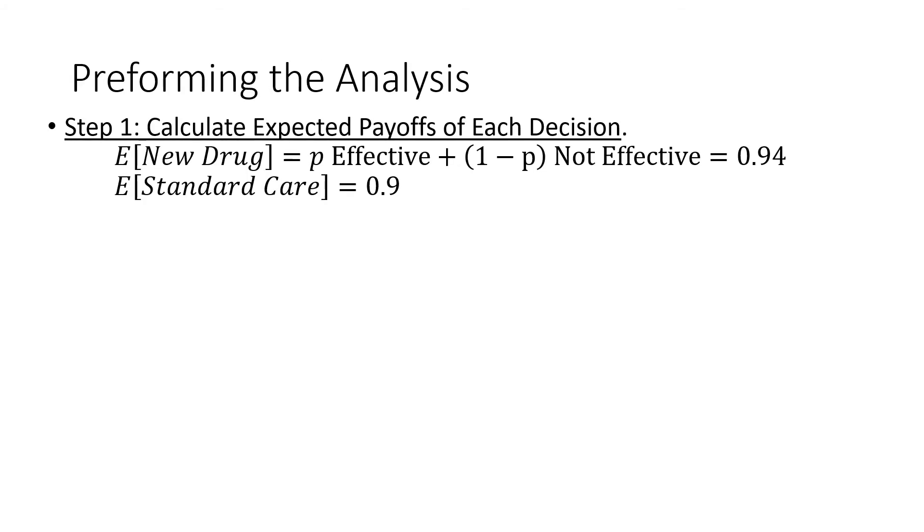For step number one, we calculate the expected payoff of each decision. We run our expected value of our new drug here, and for our standard care, since there are no probabilities associated with it, we just pick up the quality directly there.